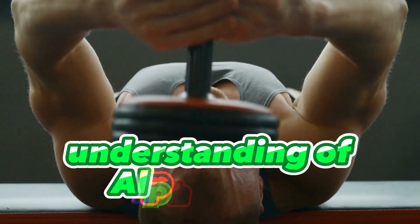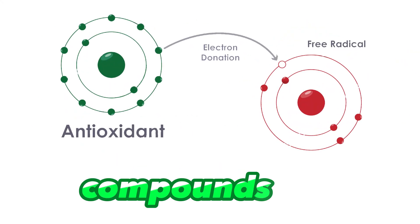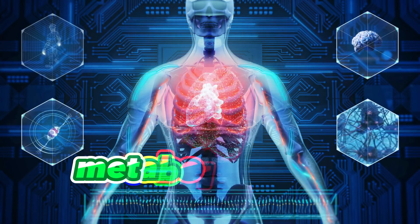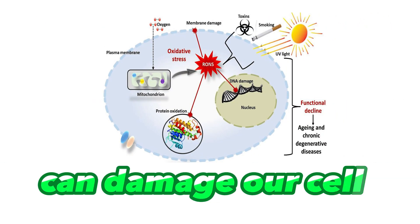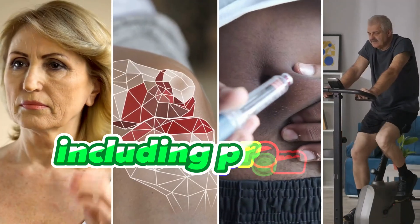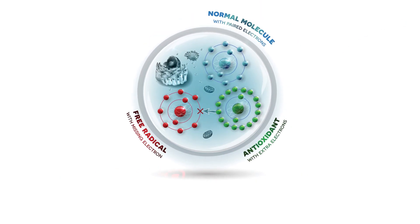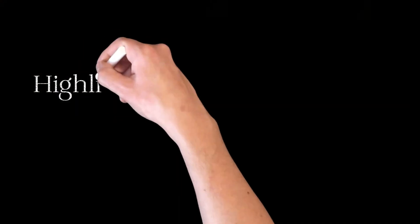Antioxidants are essential compounds that play a crucial role in neutralizing free radicals. Free radicals are unstable molecules produced during normal metabolic processes, but they can also be generated by external factors such as pollution, UV radiation, and certain lifestyle choices like smoking and unhealthy diets. These free radicals can damage our cells, leading to oxidative stress, which is linked to premature aging, inflammation, and chronic diseases like diabetes and cardiovascular conditions. Antioxidants act as the body's defense system by donating an electron to stabilize free radicals, preventing cellular damage.